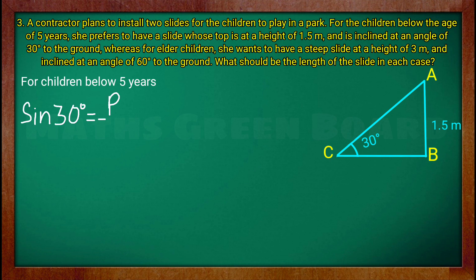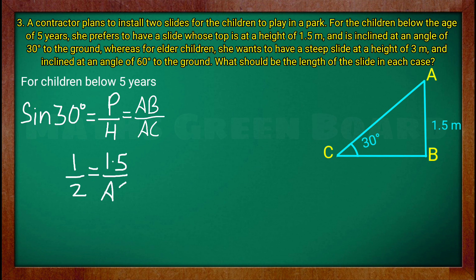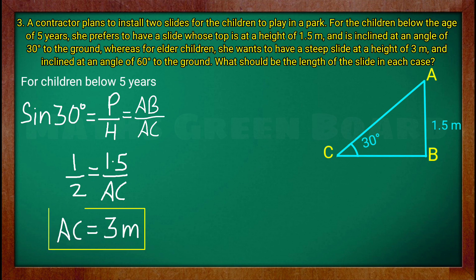We write sin 30. The sin 30 value is equal to AB upon AC. AB is equal to 1.5 meters and AC is not given. So, 1/2 equals 1.5 upon AC. We cross multiply: AC is equal to 1.5 times 2, which gives AC equal to 3 meters. So for children below 5 years, the length of the slide is 3 meters.